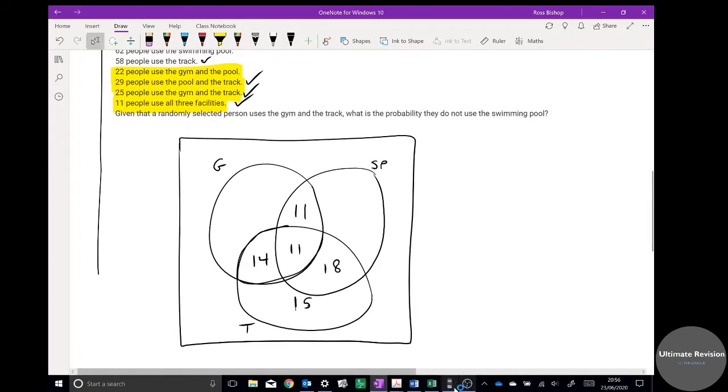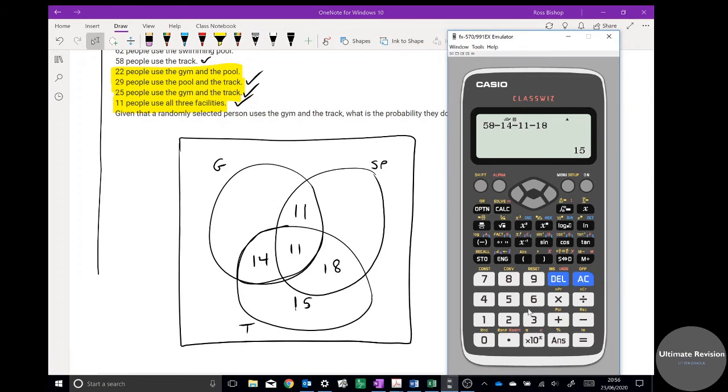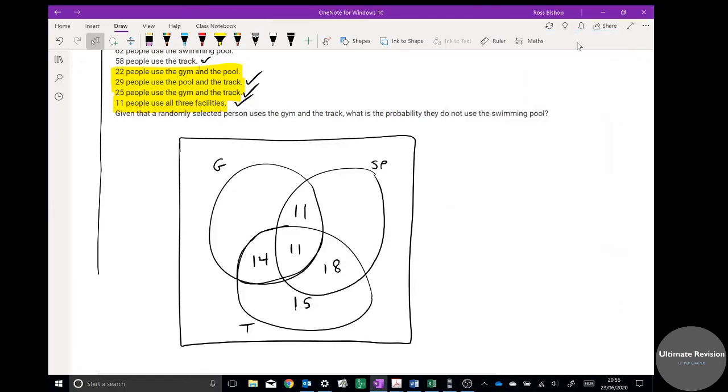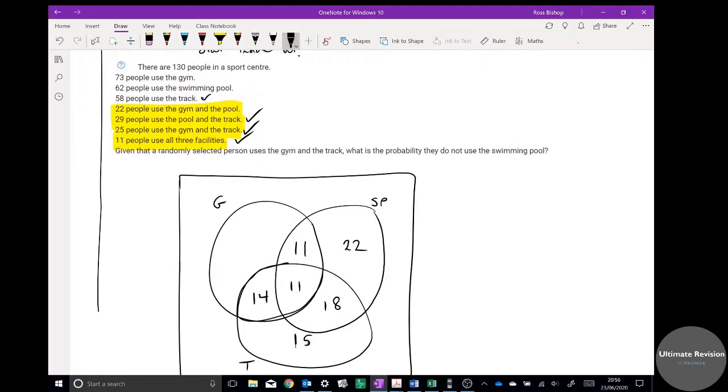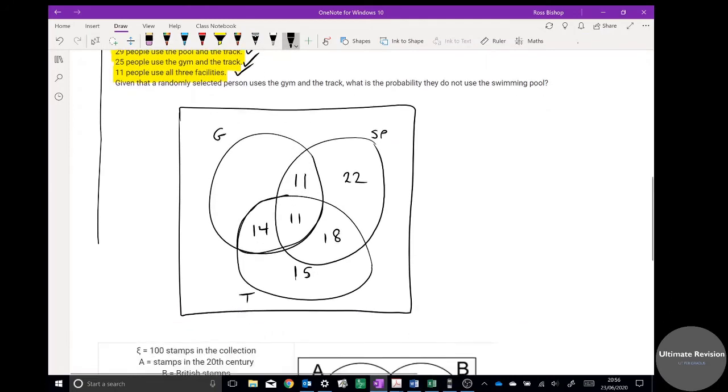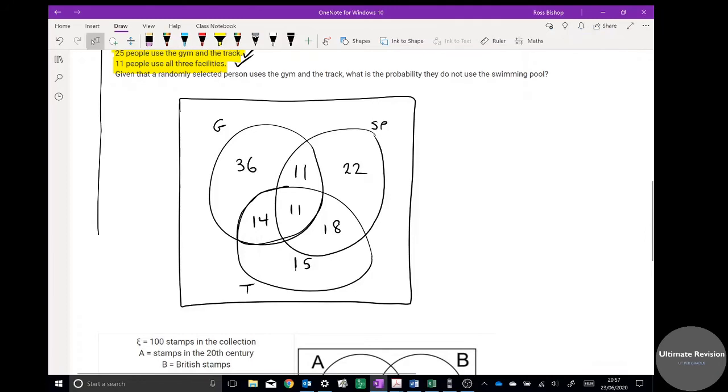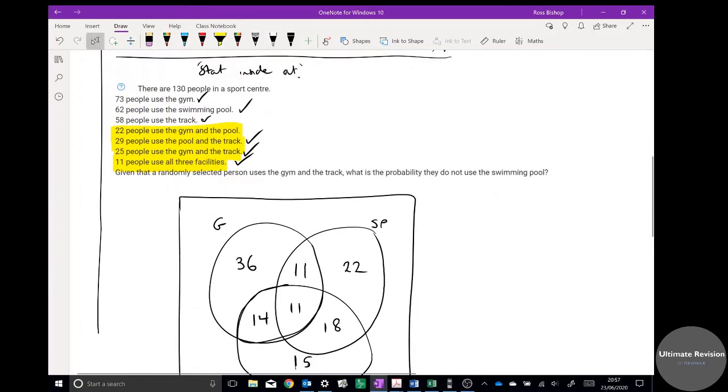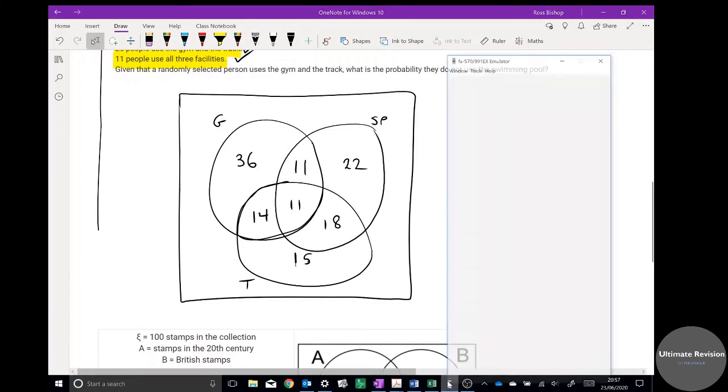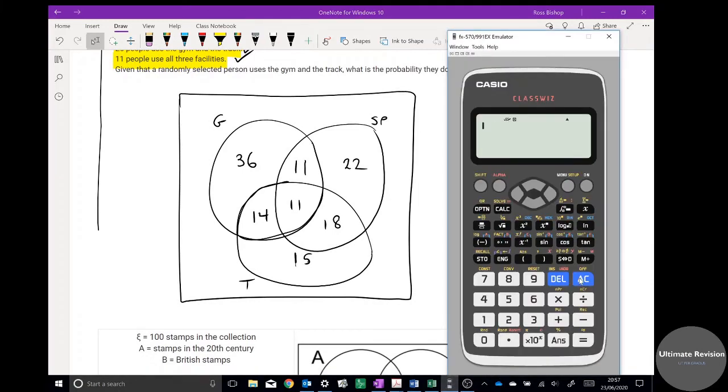62 use the swimming pool, so that whole SP bubble is going to be 62. 62 minus 11 minus 11 minus 18, 22 goes in there. And the next one is 72 use the gym, so 72. 36 is going to be in there. And then my final bit of information, I always really work from the bottom up.